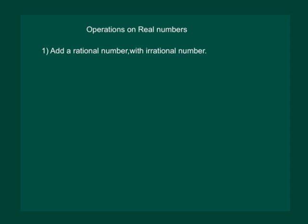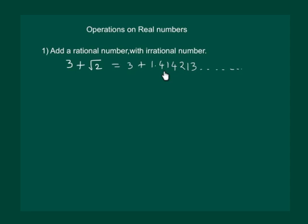Let us try to find out 3 plus root 2. We know that 3 is a rational number as it can be written as 3 by 1, and root 2 is an irrational number. We get 3 plus a non-terminating non-recurring number. On addition, it will give us again a non-terminating non-recurring number. That means that on adding a rational number with an irrational number, the result is an irrational number.